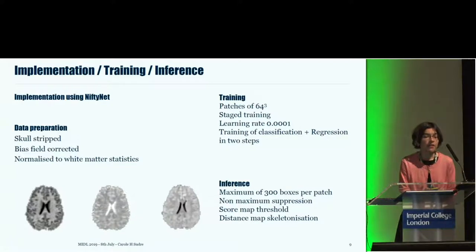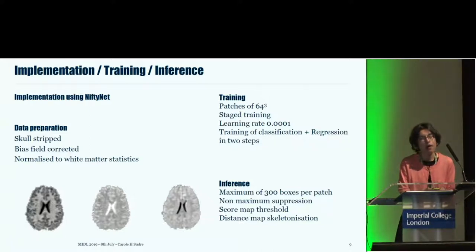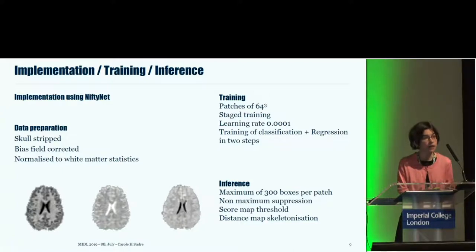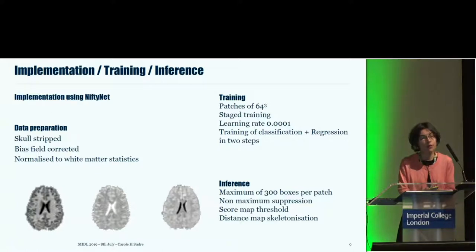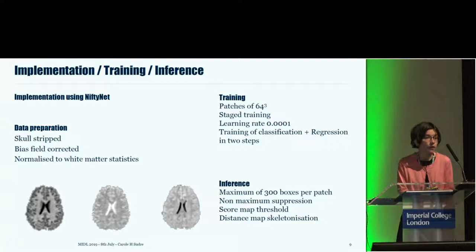For implementation, we used NIF2NET and prepared data by skull stripping brain images, bias field correcting them, and normalizing intensity with respect to white matter statistics. For training, we used 64-cube patch windows with a staged training strategy: first training feature extraction to the regression maps and fixing those weights, then training the region proposal network branch, fixing it, and finally training the classification path. For inference, we allowed a maximum of 300 boxes per patch and used non-maximum suppression to avoid excessive overlap, using score maps from the proposal network combined with distance maps.